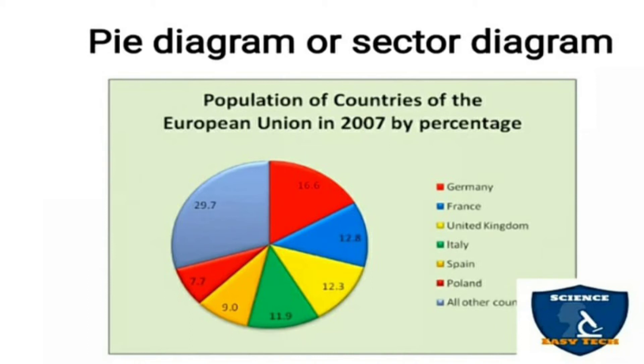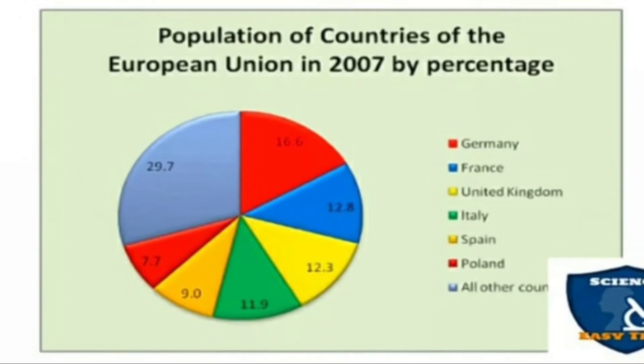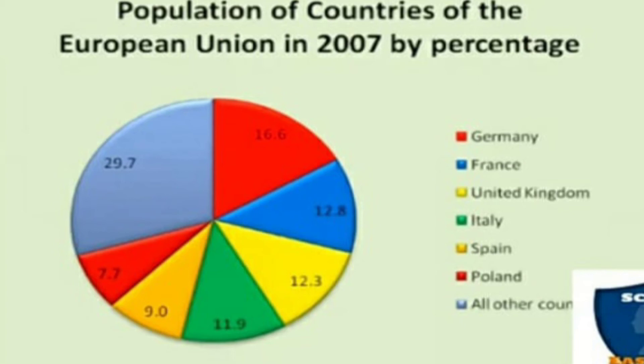You can have three dimensional pie charts also. This is one more example for pie or sector diagram. Population of countries of the European Union in 2007 by percentage. Germany 16.6%, France 12.8%, United Kingdom 12.3%, Italy 11.9%, Spain 9%, Poland 7.7%, and all other countries 29.7%. Maximum 3 to 7 you can represent in a pie diagram. More than that it will be confusing for the viewers.